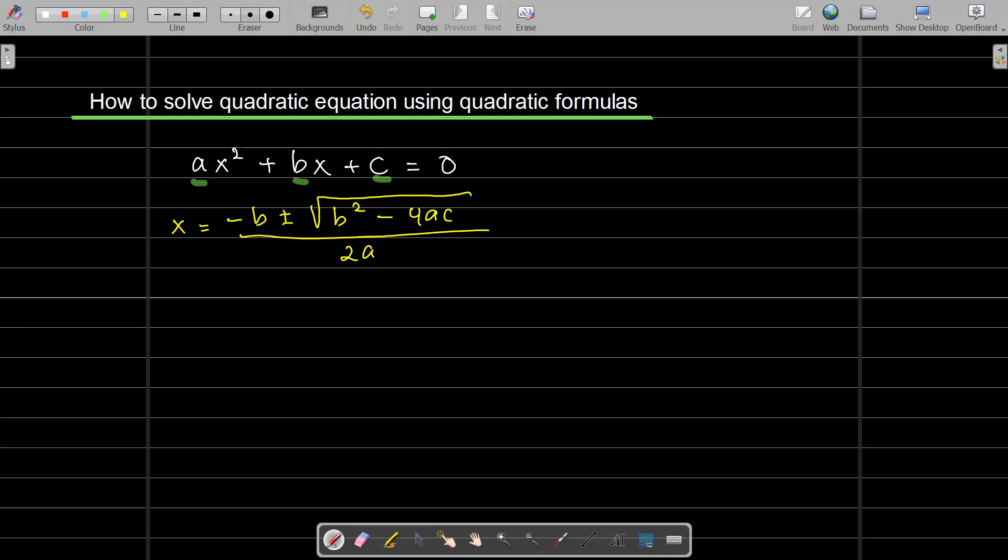Let's say if you have this equation, for example: x² - 2x - 15 = 0.